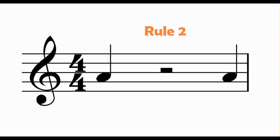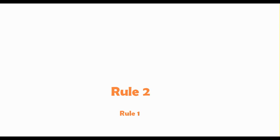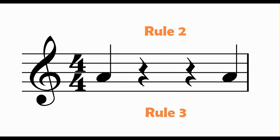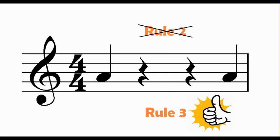As you may have realised, a number of these rules contradict one another. Rule 2 says I should write as few rests as possible, but rule 3 says I should have a divide down the middle of my 4/4 bar. A good rule of thumb is to follow the order of the rules — the higher the number of the rule, the more important it is. Therefore we would write two crotchet rests here instead of a minim, because rule 3 is higher and therefore more important than rule 2.